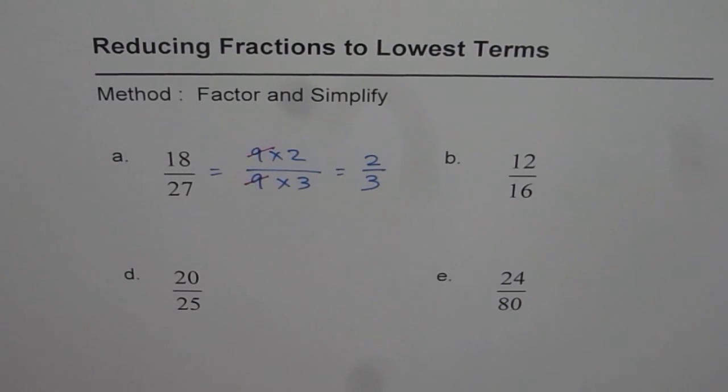So that is the lowest term representation of 18 over 27. It's an equal fraction. 18 over 27 is same as 2 over 3, and that's how we do it.